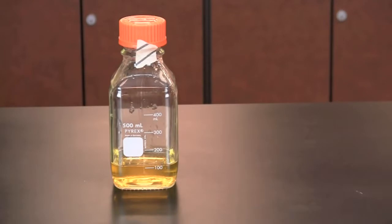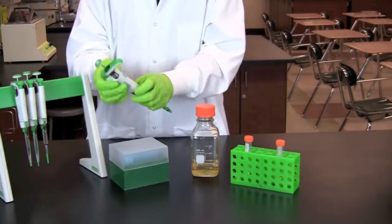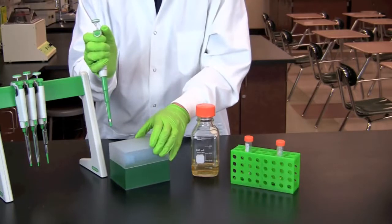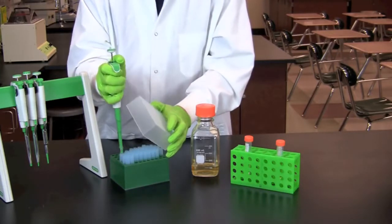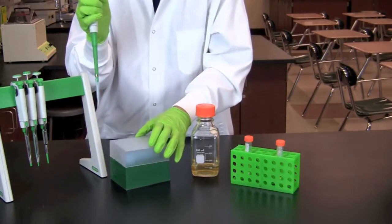After taking the media out of the autoclave, allow the media to cool to 55 degrees Celsius prior to adding ampicillin. Ampicillin is destroyed at temperatures above 60 degrees Celsius. Set your pipette for the volume of antibiotic prescribed in your lab protocol and transfer that volume to your media.